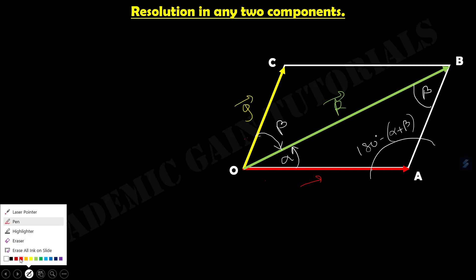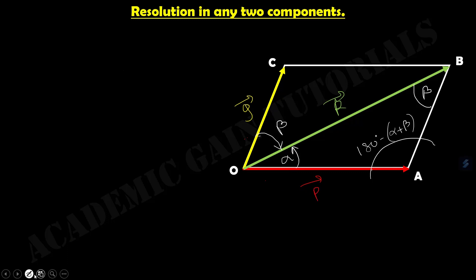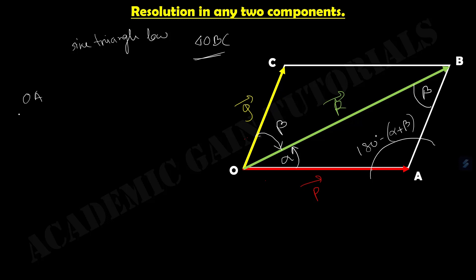Now we have to find out what is the value of vector p and what is the value of vector q — the component vectors p and q. To determine the value of p and q, we will apply the sine rule on triangle O, B, C. Applying the sine rule gives us: OA divided by sine beta, AB divided by sine alpha, equals OB divided by sine of (180 degrees minus alpha plus beta).